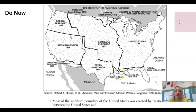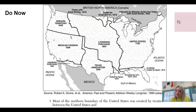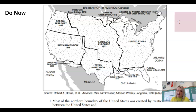The do now is a map practice. It's asking: most of the northern boundary of the United States was created by treaties between the United States and... A treaty is basically an agreement that a country has with another country. So like after World War I, there was the Treaty of Versailles, which had stipulations that the United States agreed with Britain and Germany so that the war would be over. What that ends up doing is inevitably causing World War II, but that's not what we're talking about.